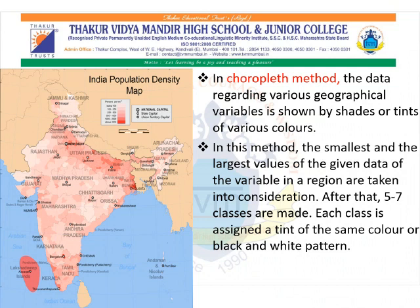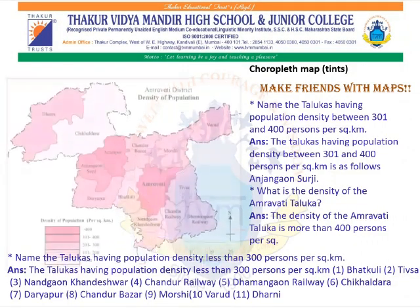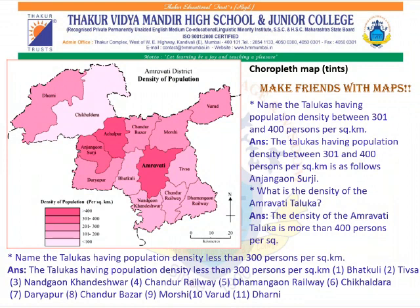The shades become lighter with a decreasing value, whereas the shades become darker with an increasing value. We can see in the index that 5 to 7 classes are made and each class is assigned a tint of the same color or black and white pattern. In this method, only one value is given to one sub-administrative unit in a region. The smallest and largest values are shown in the map, and 5 to 6 different classes are given in the index, each assigned a tint of the same color.